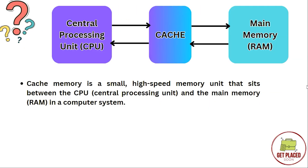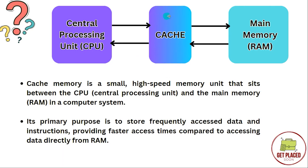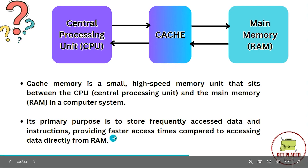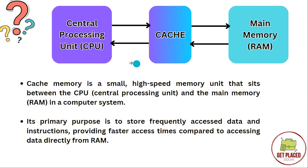First, let's understand what is cache memory. Cache memory, as you can see here, is a small, high-speed memory that sits between the CPU and main memory. The primary purpose of cache memory is to store frequently accessed data and instructions, providing faster access compared to accessing from the RAM. So if there are files which you use frequently, instead of taking them from RAM every time, you can take them from the cache.